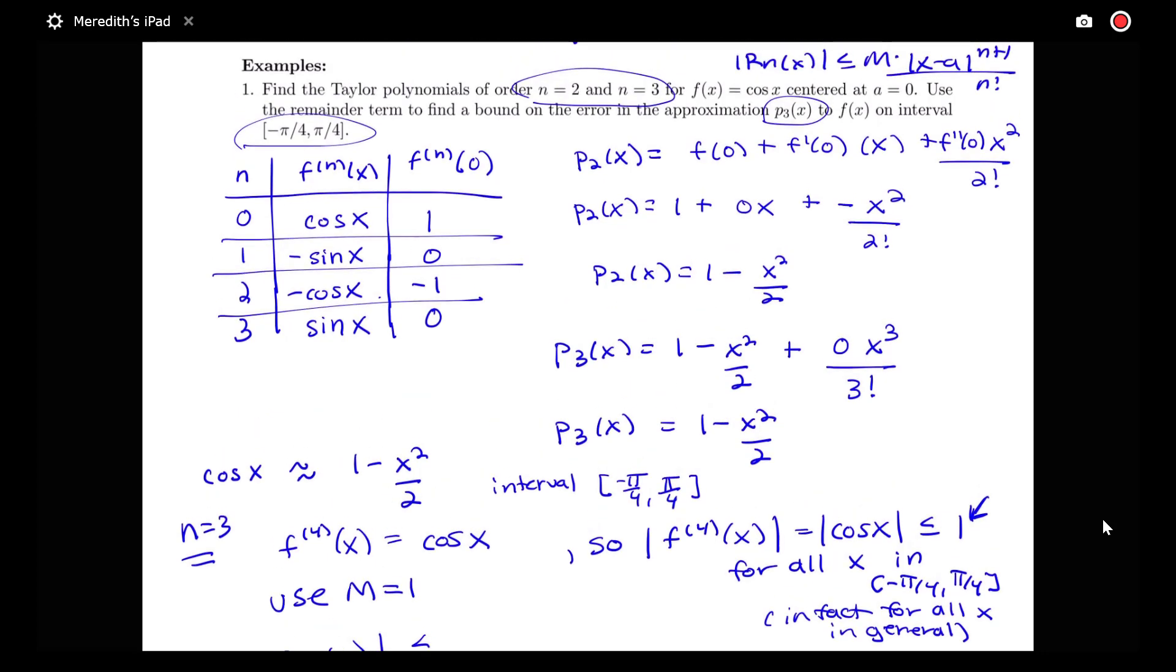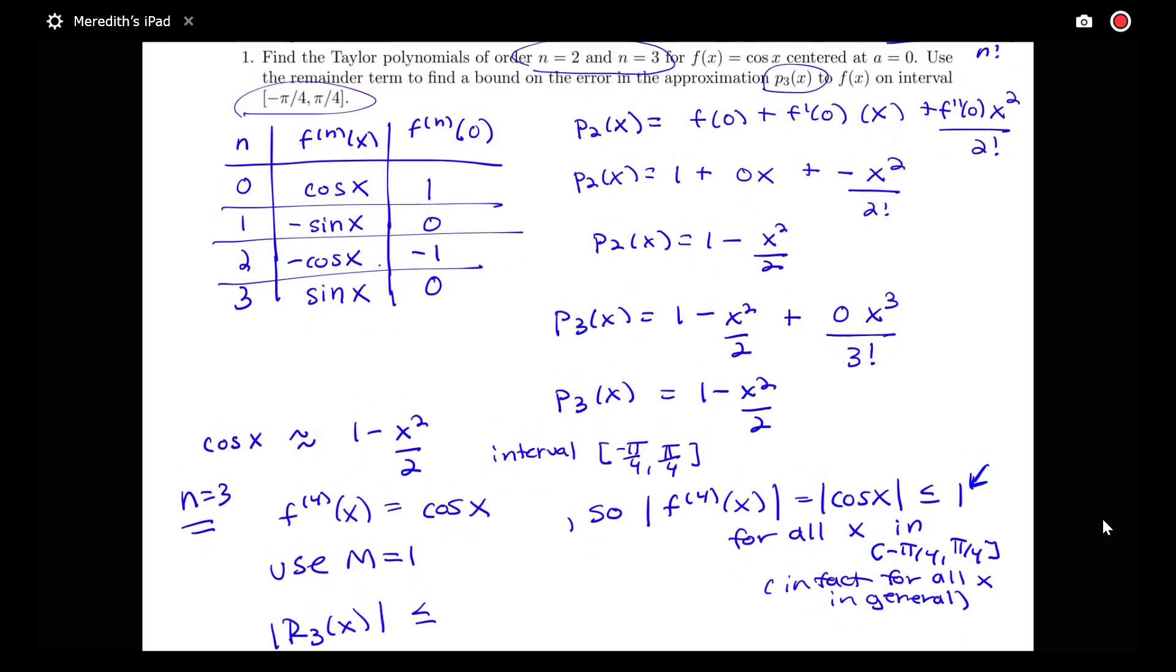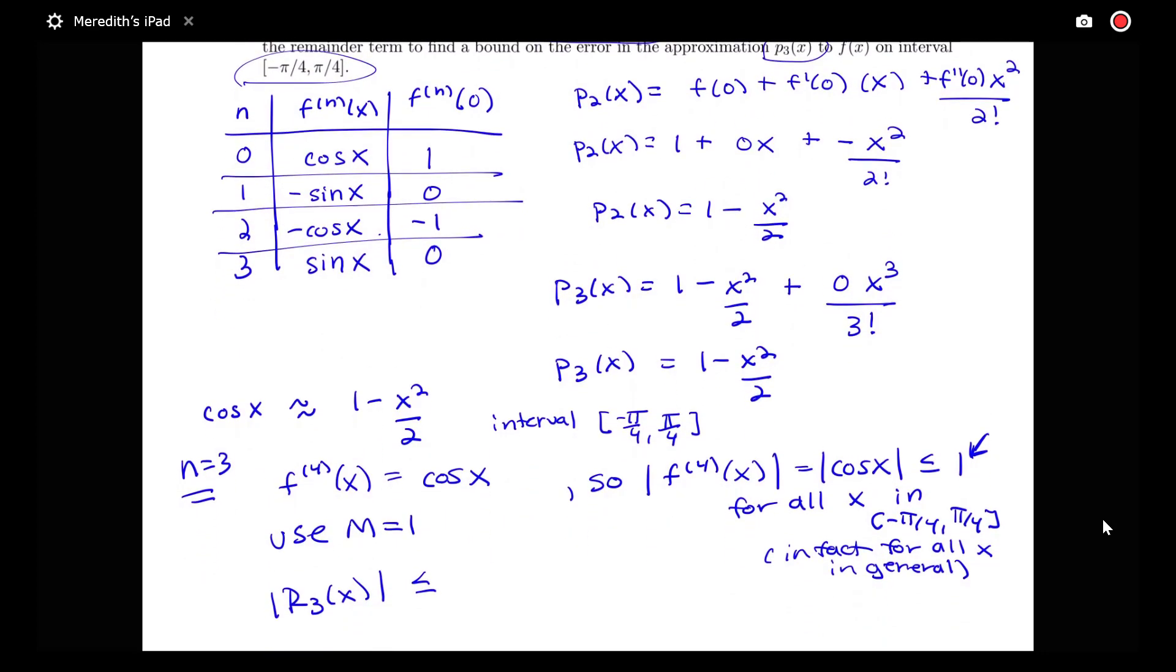a to the n plus 1 over n factorial, using n is equal to 3, a is 0, and m is 1. So I'm going to have 1 times x to the fourth power here, all over 4 factorial.